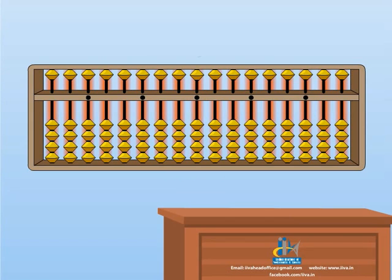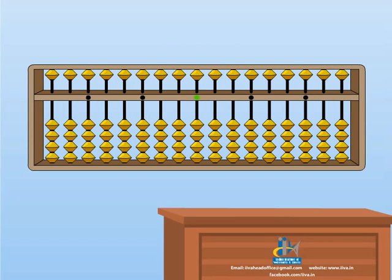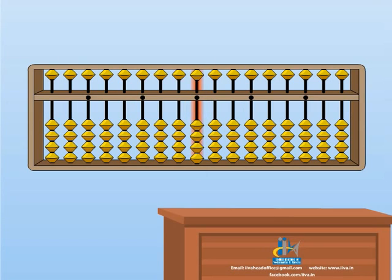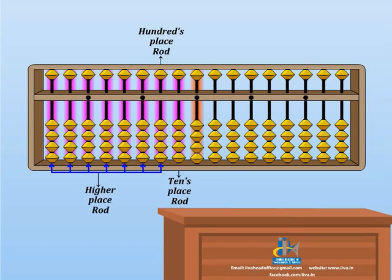These are rods of the abacus. The center rod or ones place rod. We start our questions from this center rod. Rods to the left hand side are tens place rod, hundreds place rod, and higher places rod.